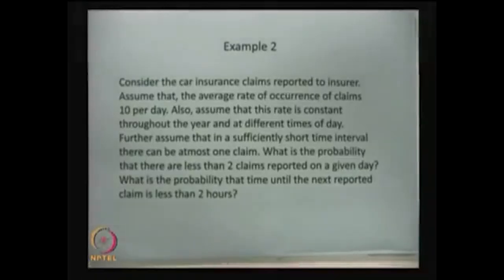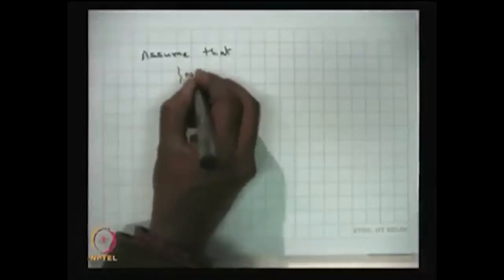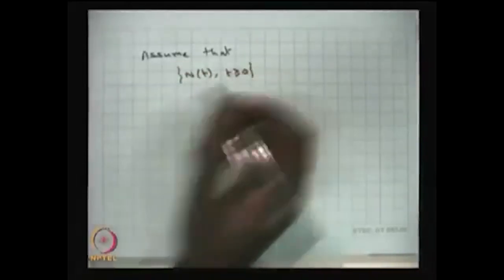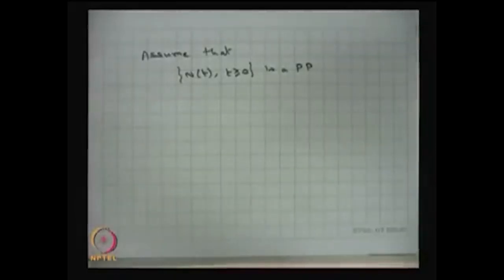The first question asks: what is the probability that there are fewer than two claims reported on a given day? Since the increments are stationary, any day can be considered as the interval. We can assume n(t), the number of car insurance claims reported to the insurer, follows a Poisson process based on the assumptions given in the problem.